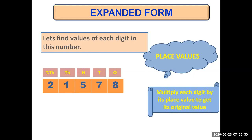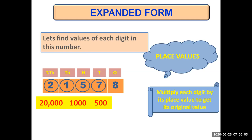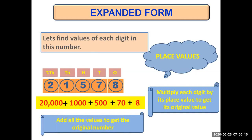Like two is at ten thousands place, so we'll multiply two by ten thousands. We'll multiply digits by their place values starting from the left, from the largest place value. So two at ten thousands place means two multiplied by ten thousand, which gives us twenty thousand. One at thousands place means one multiplied by thousand gives one thousand. Five at hundreds place means five times hundred is five hundred. Seven at tens place means seven times ten is seventy. And eight at ones place: eight times one is eight. These are the individual values of all the digits. We'll just add up all these values to get the original number.